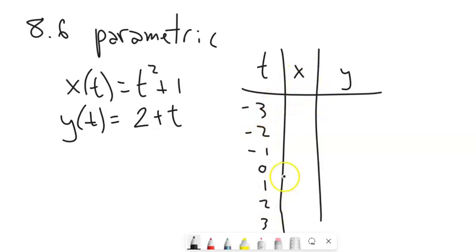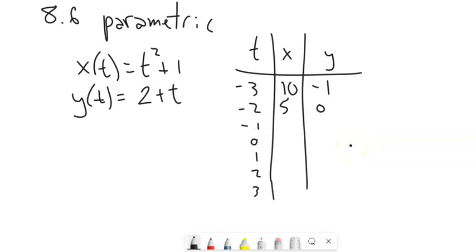So t is going to run through those values. It could also be like negative 2.5, negative 2.7, all the values between those. But then we'll plug them in and get x and y values. If I plug in negative 3, negative 3 squared is 9, plus 1 is 10. When t is negative 3, x is 10. And plugging into here, 2 plus negative 3 is negative 1, y is negative 1. You just keep doing that - plug in negative 2 for t, get 5 and 0, and keep going.